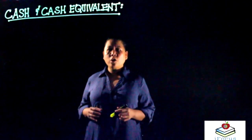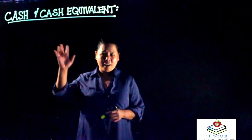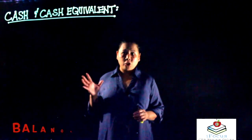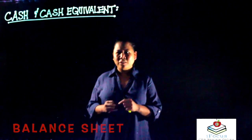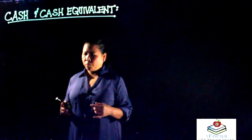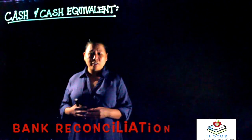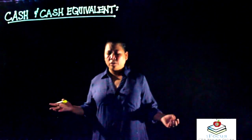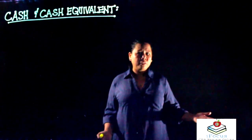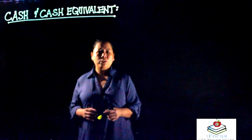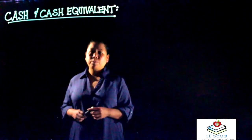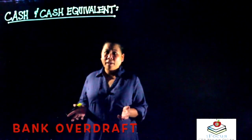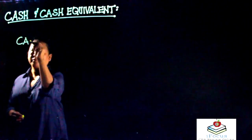In this video we are going to learn about cash and cash equivalents — the first account we see on our balance sheet, also called the statement of financial position. We are also going to learn about bank reconciliations: the three methods that reconcile the records of the company versus the records of the bank. We'll also cover undelivered checks, unreleased checks, post-dated checks, stale checks, compensating balance, bank overdraft, and petty cash fund.